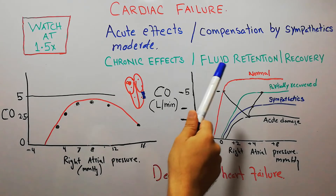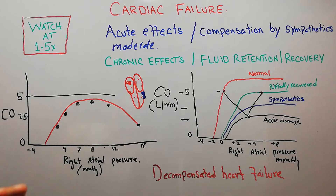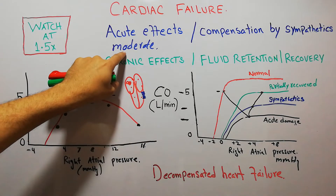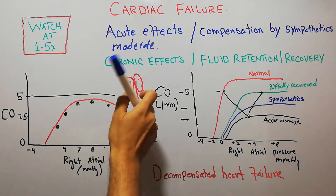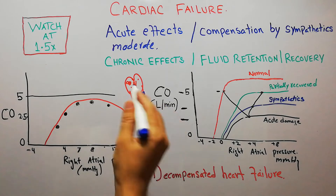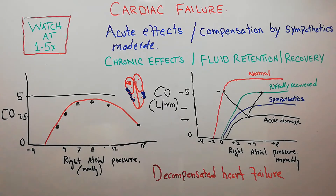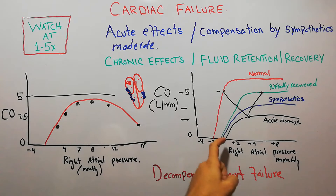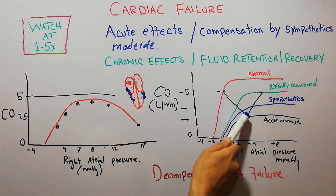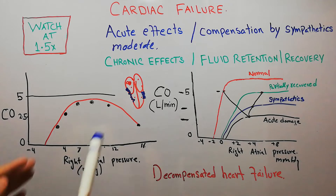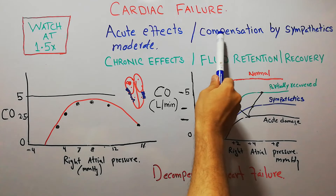After the acute effects, compensation by the sympathetic nervous system occurs. It is important to understand that compensated heart failure occurs in moderate or small damage, while decompensated heart failure occurs when the damage is large. With moderate damage, the cardiac output has decreased and the right atrial pressure has increased from 0 to about 3 or 4. But soon after, the sympathetic nervous system gets activated and causes compensation.